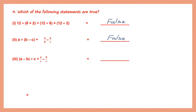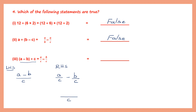Statement 3: (A minus B) divided by C equals A/C minus B/C. Left hand side: (A-B)/C. Right hand side: A/C minus B/C — the LCM is C, so this gives (A minus B)/C. Left hand side equals right hand side, so this statement is true.